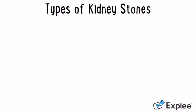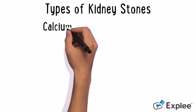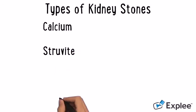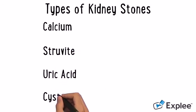There are four main types of kidney stones: calcium stones, struvite stones, uric acid stones, and cysteine stones.